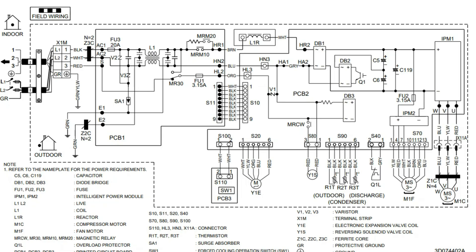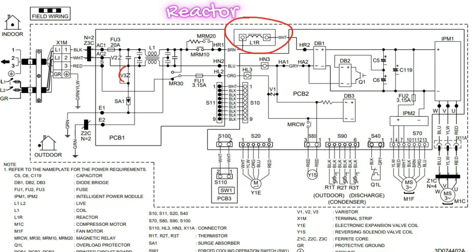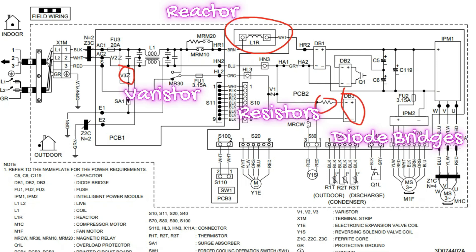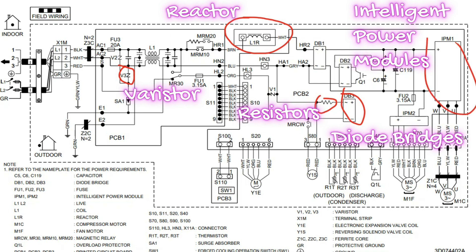I want to start by showing you components you're not going to see in typical schematics of older systems. We're talking about things like a reactor, varistors, resistors, diode bridges, and intelligent power modules.